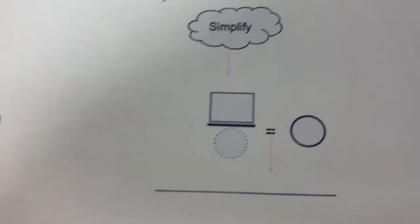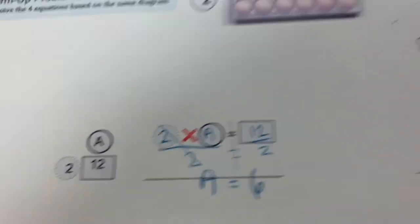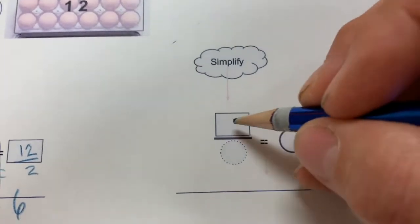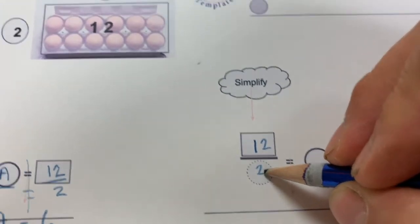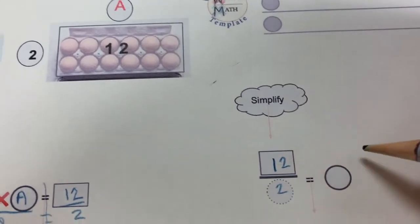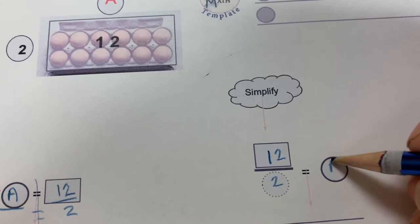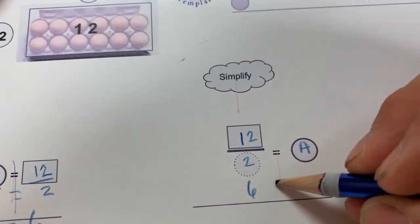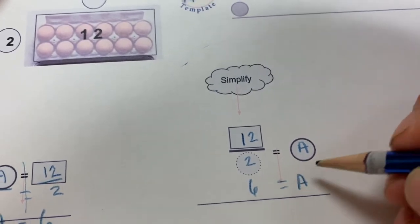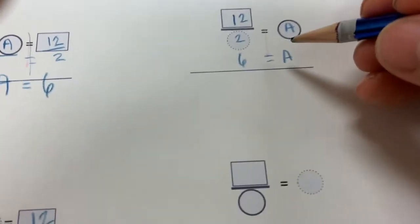Now in this case, the division form is going to be easier. If you think we have 12 here divided by 2 is going to be A. Well, we just have to simplify that. 12 divided by 2 is 6 equals A. So again, we're getting the same answer for A.